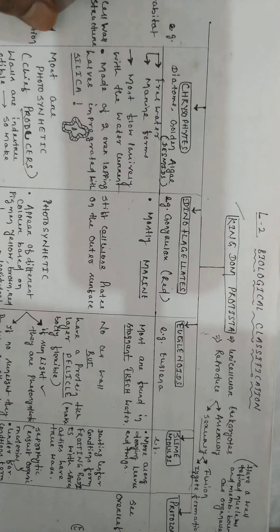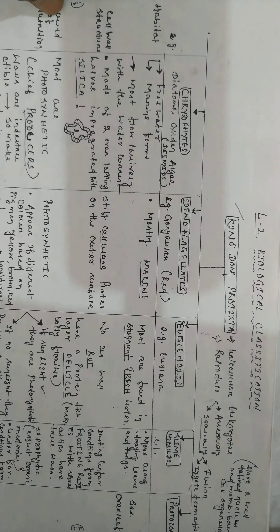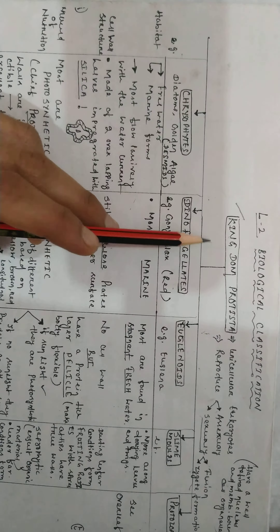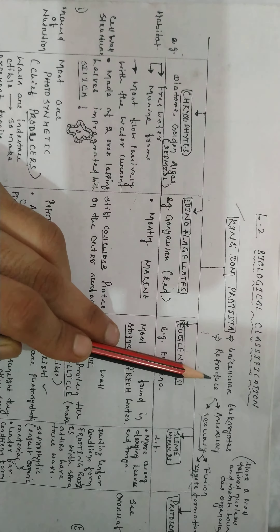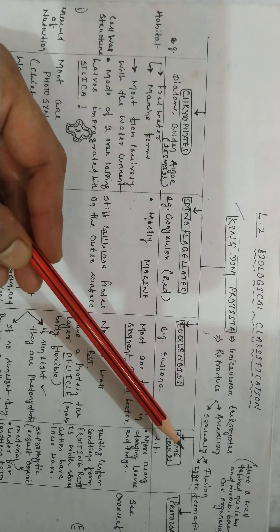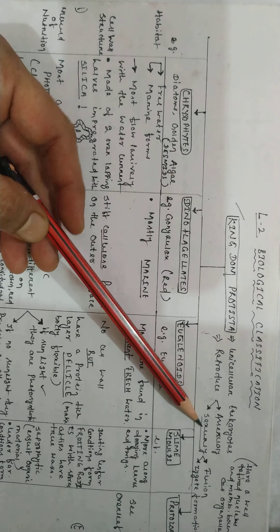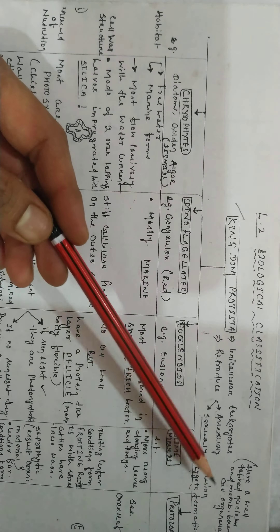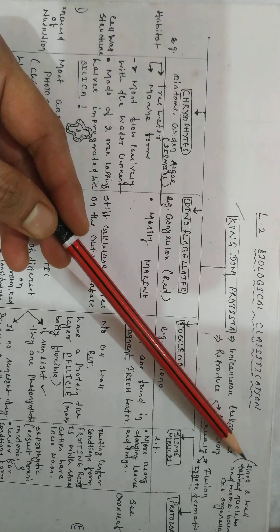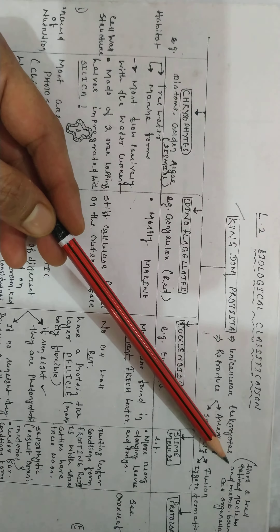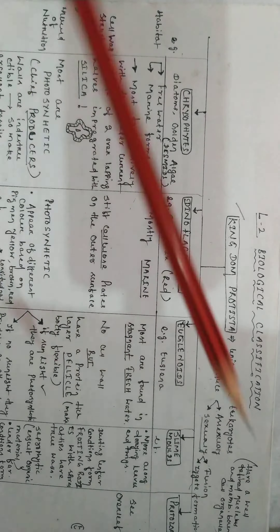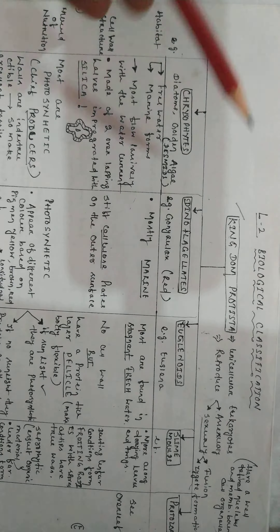Kingdom Protista consists of unicellular eukaryotes. They reproduce via asexual or sexual modes. When they reproduce sexually, they undergo either fusion or zygote formation. They have a well-defined nucleus and membrane-bound cell organelles.